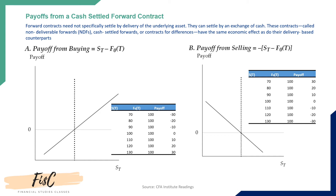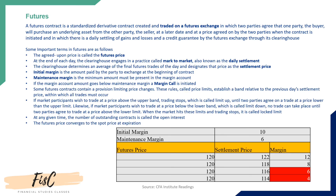The forward price payoff for buying is the spot price minus the forward price, whereas the payoff for selling is the forward price minus the spot price. The forward price is fixed at the time of contract initiation, while the spot price changes every day based on market price. In the table, the forward price is fixed at 200 and the spot price ranges from 70 to 130. As the spot price increases, the payoff for the buyer increases, while the payoff for the seller decreases — as shown in the corresponding graph.